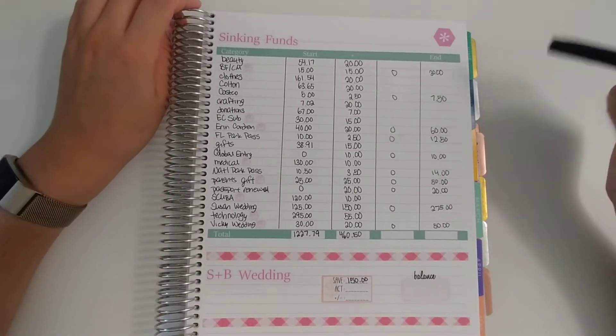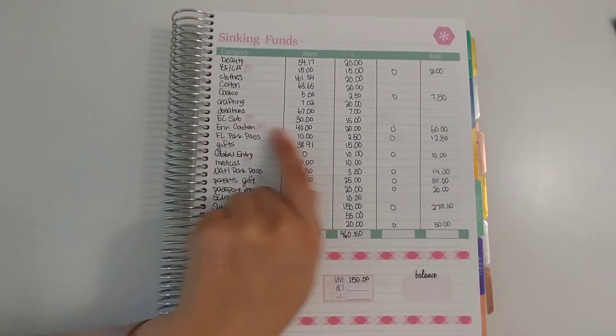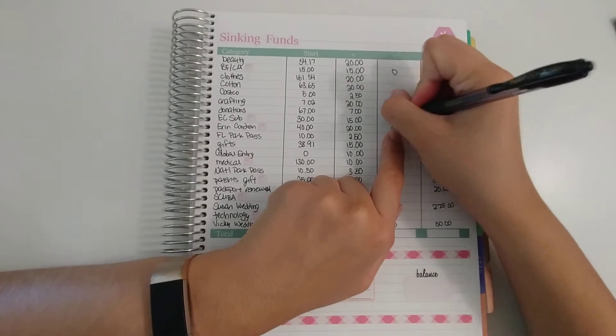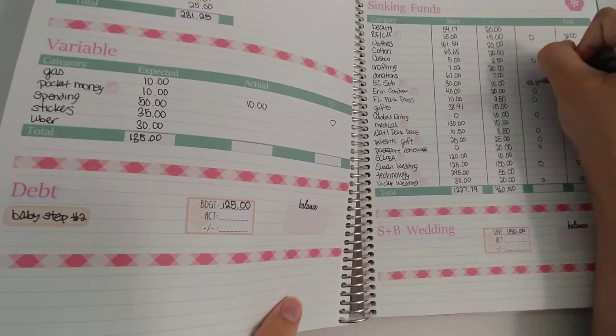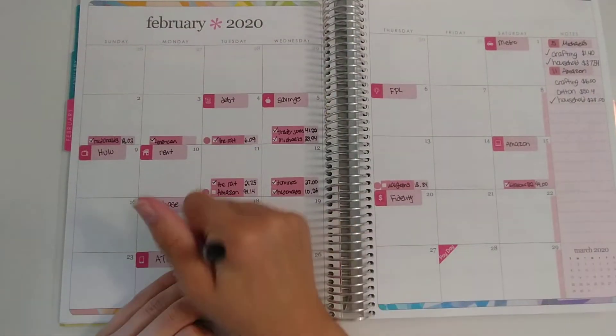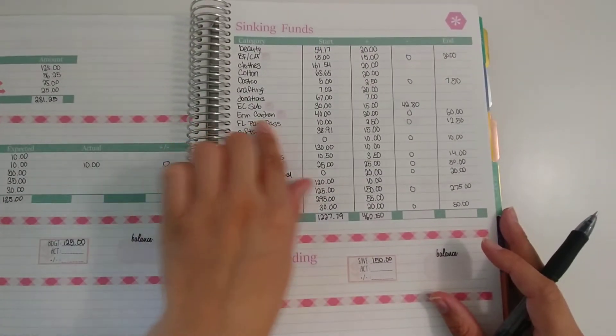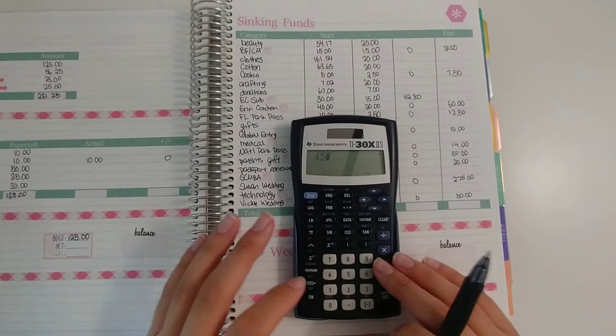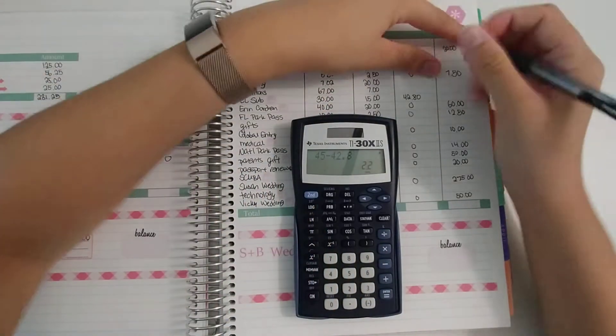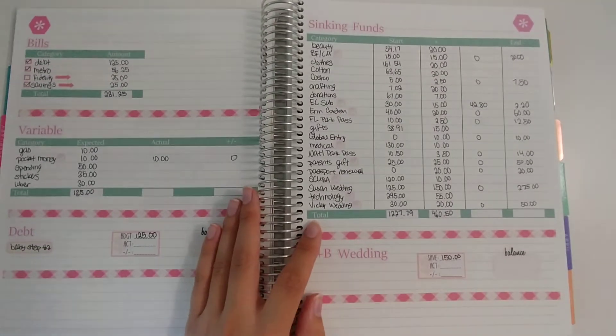For my sinking funds I think I already filled in everything that I need to. Oh actually no I didn't. So the Erin Condren subscription came out. I actually purchased that. That was $42.80. This is technically in week three budget but since it's a sinking fund it doesn't really matter when it happens. So I'm going to check that off. And then let's see how much I had left over. So $45 minus $42.80, I guess I could have done that in my head, but $2.20 remaining. So that is done.